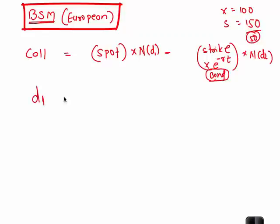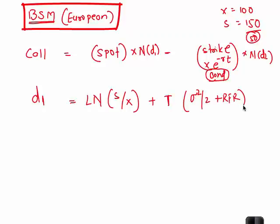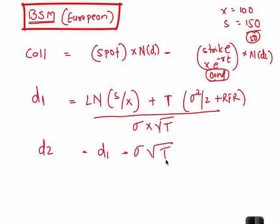Then the formula for d1: first we will take the distance between spot and strike, so log normal spot divided by strike, plus time adjusted half of variance added with RFR, divided by sigma into root t. Then d2 would be d1 minus sigma into root t. And once you have d1 and d2, you take N(d1) and N(d2), you put them into this formula, you would get value of the call option.